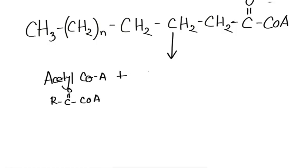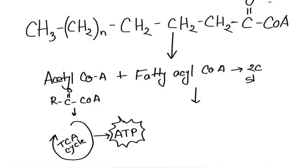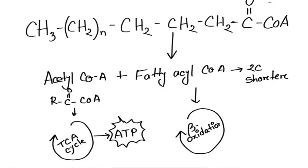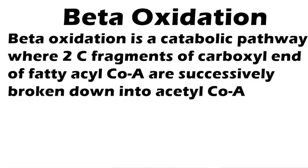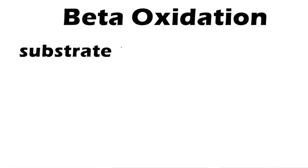After oxidation at the beta carbon, fatty acid is broken down into acetyl-CoA, which is a two-carbon compound, and a fatty acyl-CoA which is two carbons shorter than the previous one. The acetyl-CoA will enter into the TCA cycle and produce ATP, which will be discussed in a separate video. The two-carbon-shorter fatty acid will again enter into beta oxidation, and this process will keep repeating until it is fully oxidized. Beta oxidation is a catabolic pathway where two-carbon fragments of the carboxyl end of fatty acyl-CoA are successively broken down into acetyl-CoA. The substrate is fatty acid and the product is acetyl-CoA.